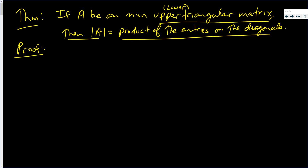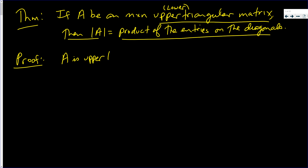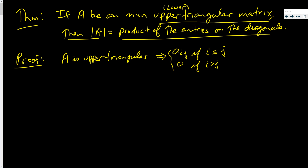For the proof, let's use definitions. A is upper triangular means that you get a_ij if i is less than or equal to j, and you get zero if i is bigger than j. So whenever i is bigger than j, you're going to get zero.